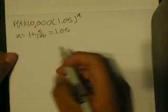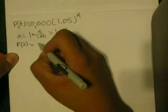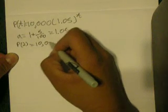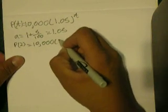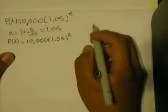If we want to find the population after two years, we have P(2) = 10,000 × 1.05²,